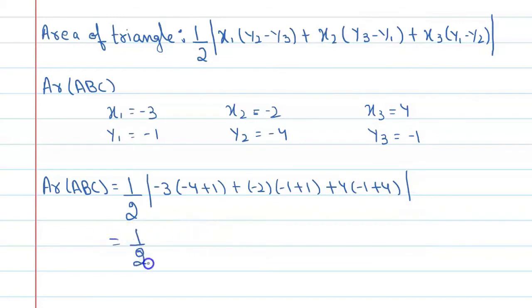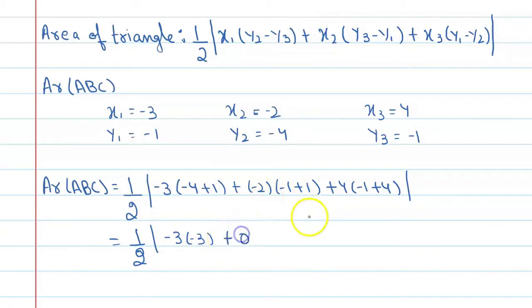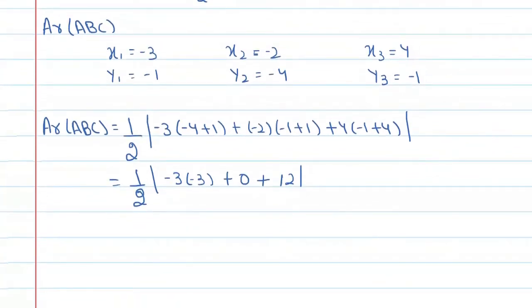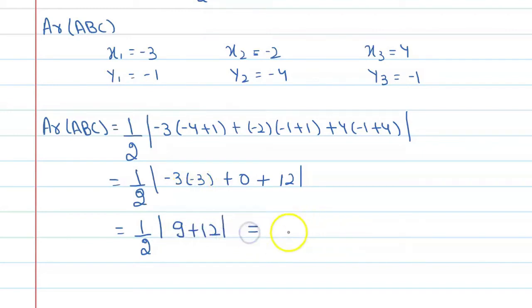Simplifying: 1/2 times modulus of [(-3)(-3) + 0 + 4(3)] = 1/2 times modulus of [9 + 0 + 12] = 1/2 times 21 = 21/2.